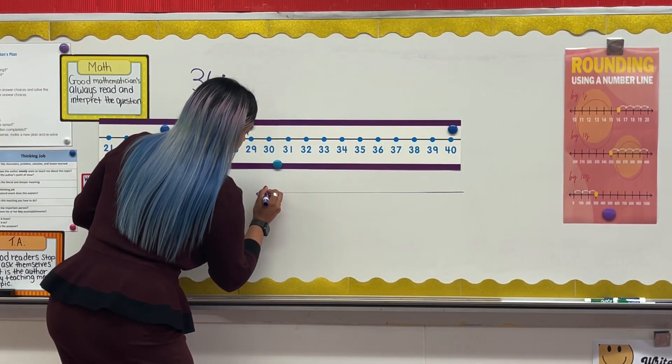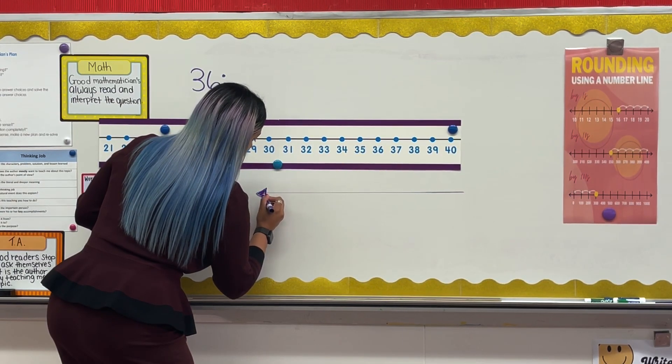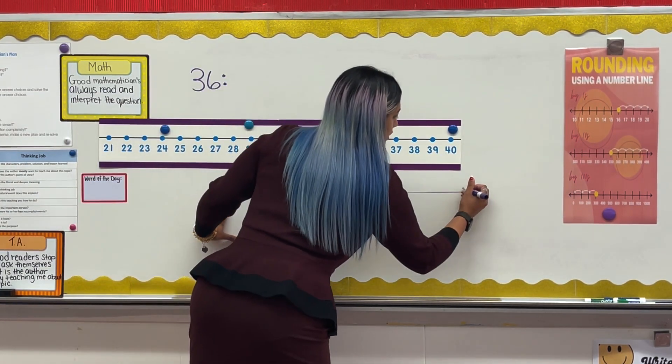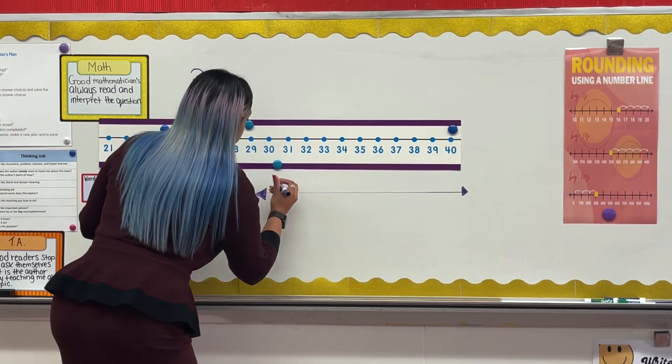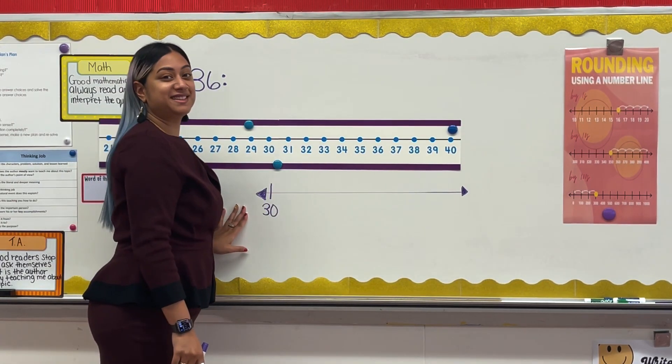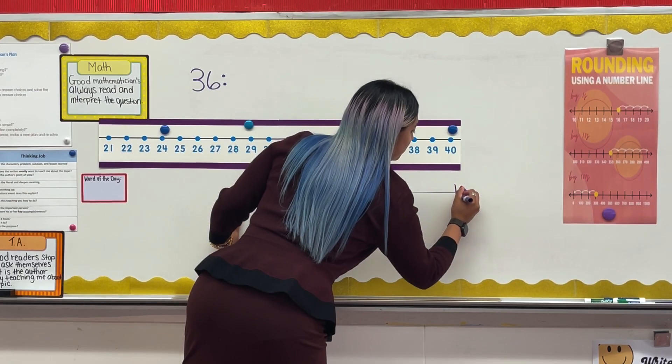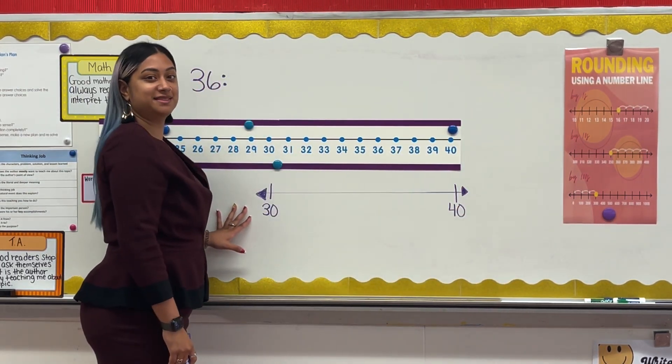I can figure this out by counting by 10s. 0, 10, 20, 30, 40. I don't have to continue counting because I know 36 is going to be somewhere in between 30 and 40. So I can now draw my starting point at 30 and my ending point at 40.